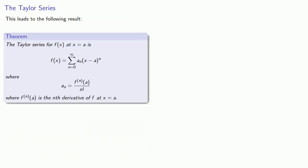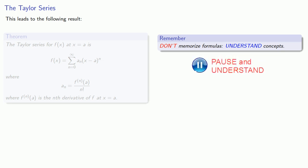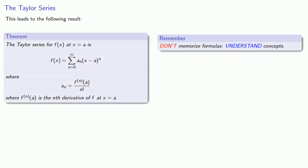And this leads to the following result, where, if you're wise about it, you will ignore this theorem, because don't memorize formulas, understand concepts. The Taylor and Maclaurin series come from assuming a power series expansion for our function and successively differentiating. But it's nice to have a formula to refer to at least. The Taylor series for a function at x equals a is given by this infinite series, where our coefficients are the nth derivatives divided by n factorial.